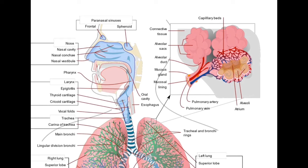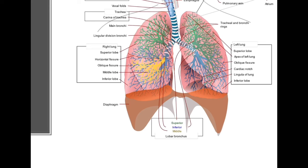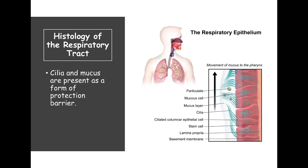Here we can see the alveolus region where capillaries surround it — this is where gas exchange occurs. We have pulmonary veins and arteries that give branches to these capillaries. Also, for those taking human gross anatomy, the bronchus or bronchi have several lobar bronchi: superior, inferior, and middle.